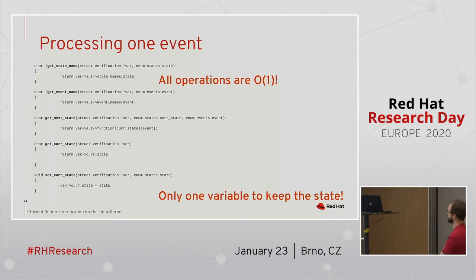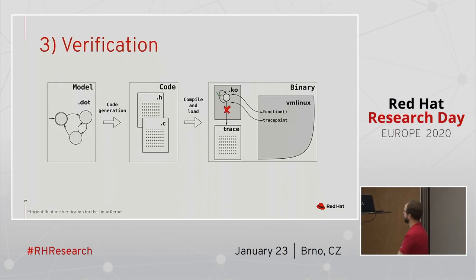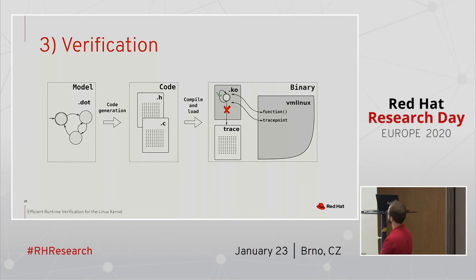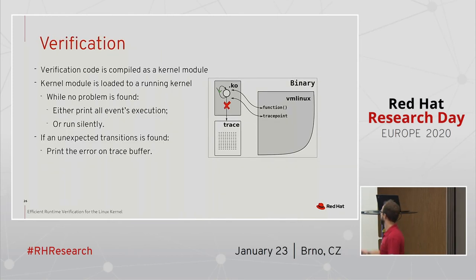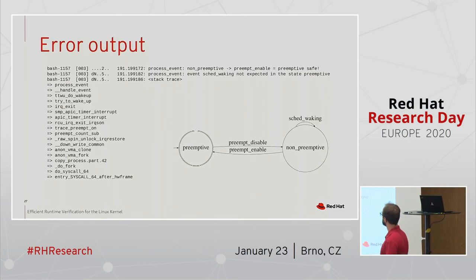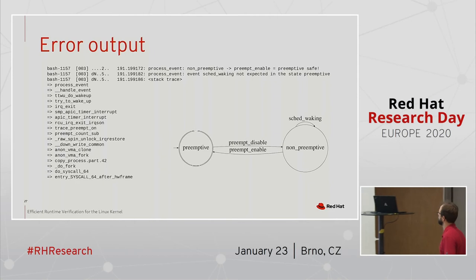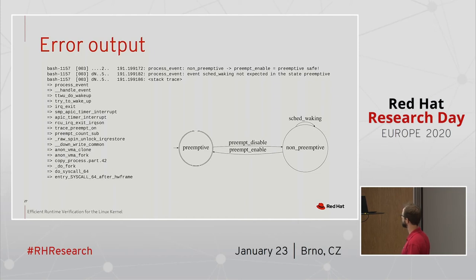After having the code, I link it, load the module, and while running I don't print anything. If I find a property that's not followed, I print the bug to the trace. Here's one example of an error: I was in the non-preemptive state and received a preempt-enable event, becoming preemptive again — that's the final state, so it's safe. Then a sched_waking event was received here, and it's not allowed in the model. So it's flagged as not expected, and here is the stack trace.